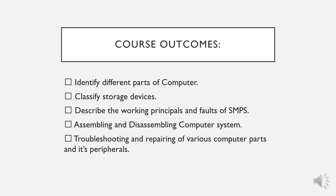Now coming to course outcomes — what are course outcomes? Course outcomes are the outcomes that a student will be able to have or understand. After learning all the units of CNTS, you will be able to identify different parts of a computer, classify storage devices, describe the working principle and faults of SMPS and other devices, assembling and reassembling of computer systems, troubleshooting and repairing of various computer parts and peripherals.